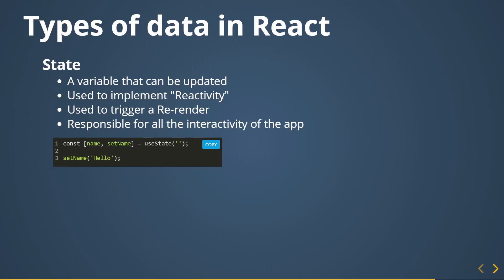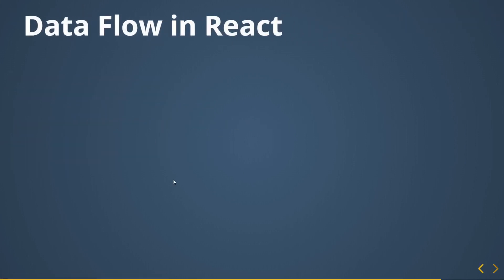The useState hook gives you back a variable and a function to update that variable. We define new state by destructuring into name and setName. The value between the parentheses is the initial value of name. Every time you call setName with a new value, that updates the state and triggers a re-render — this is exactly how you implement reactivity in React. For example, when a user submits a search, you update state, trigger a re-render, and fetch new API data.